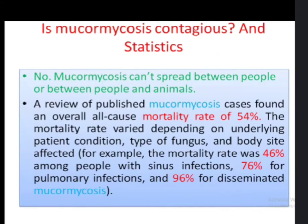Mucormycosis is not contagious and cannot spread between people or between people and animals. Regarding statistics, a review published in a medical journal found that the overall mortality rate is 54%. The mortality rate varies depending on the patient's condition, type of fungus, and body site affected — 46% for sinus infection, 76% for pulmonary infection, and 96% for disseminated mucormycosis.